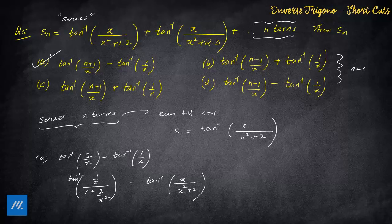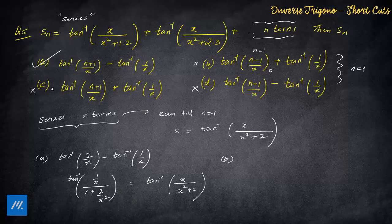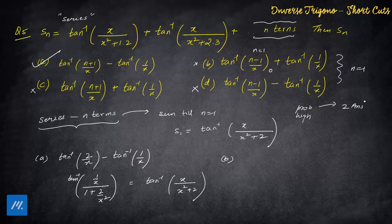JEE Main or Advanced might complicate this by having two options match at n = 1. In that case, also try n = 2 (meaning t1 + t2) for further differentiation. Checking other options with n = 1: option B gives 0, option C gives tan inverse(1/x), option D with plus sign also doesn't match. So when using this method, always check all four options since there is a higher probability of two answers matching at n = 1.